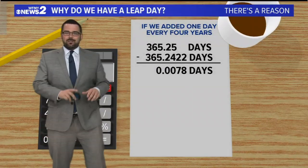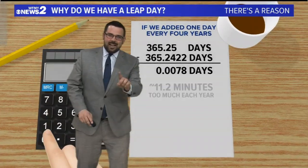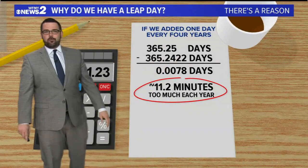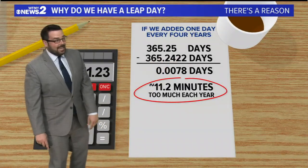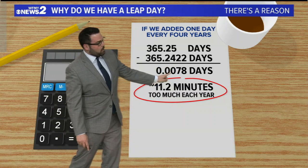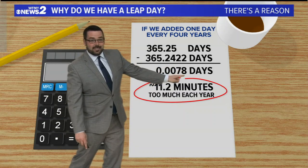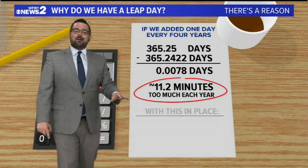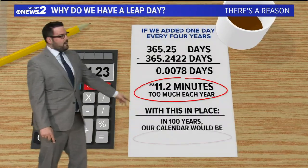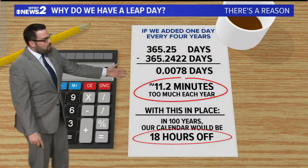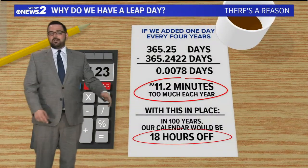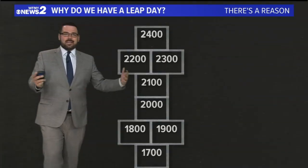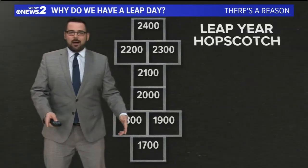Is that good enough? Kind of, but not exactly. Now we still have a little bit of a remainder again. We're actually .0078 days too much. That's 11 minutes. Doesn't sound like a lot, but if we did just allow that to happen, in 100 years our calendar will be off by 18 hours. I know this is a lot of math.